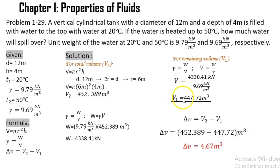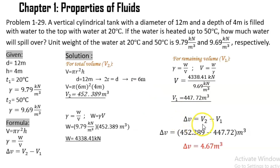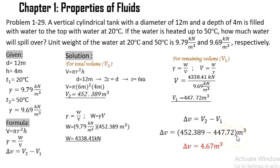Now that we have the value for our remaining volume as well as the total volume, we can get the volume displaced using the formula: ΔV = V₂ − V₁. So, 452.389 minus the remaining volume of 447.72 meter cube gives us a volume displaced of 4.67 meter cube. Therefore, the amount of water that will be spilled is 4.67 meter cube.